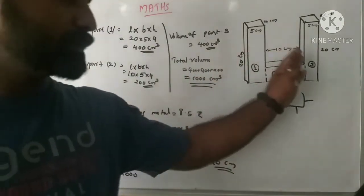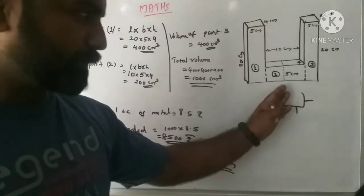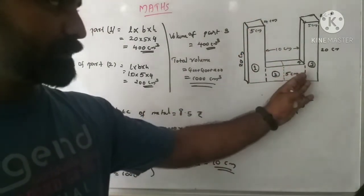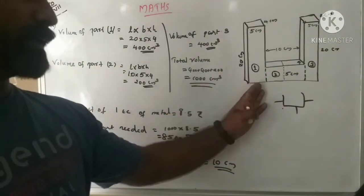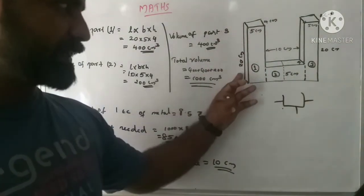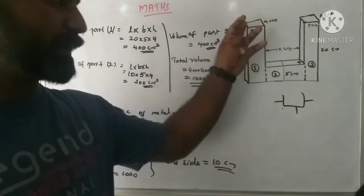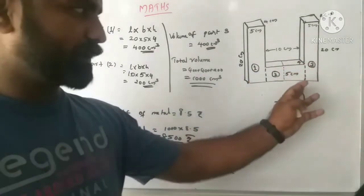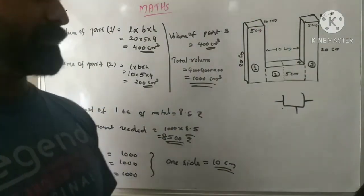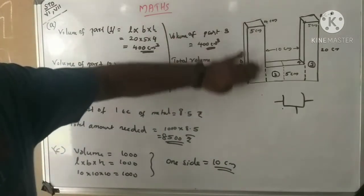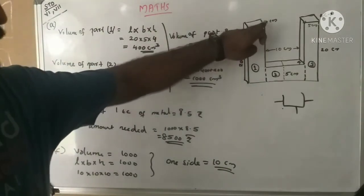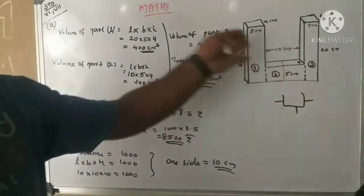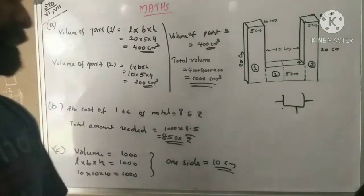For part 3, using the U-shape with 3 parts. Part 3 has length 5 and height 4, giving the same measurements as part 1. Volume of part 3 is 400 cubic centimeters. For part 2, the length is 10, so 10 into 5 into 4 equals 200 cubic centimeters.